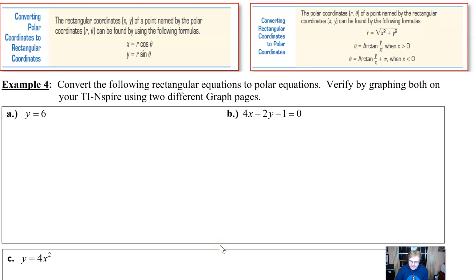So let's read our example four. Convert the following rectangular equations to polar, verify by graphing both on your calculator, and you can use two different graph pages. I'll explain what that means. I'm using the TI Inspire software. If you're following along using a different model of graphing calculator, you can still do the same thing. It's just that I have a slightly modified program that really lets you see the comparison of the two. So we'll show you that here in just a moment.